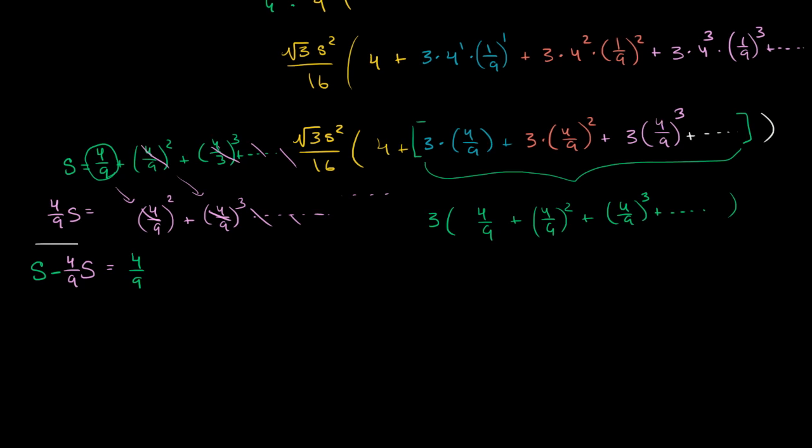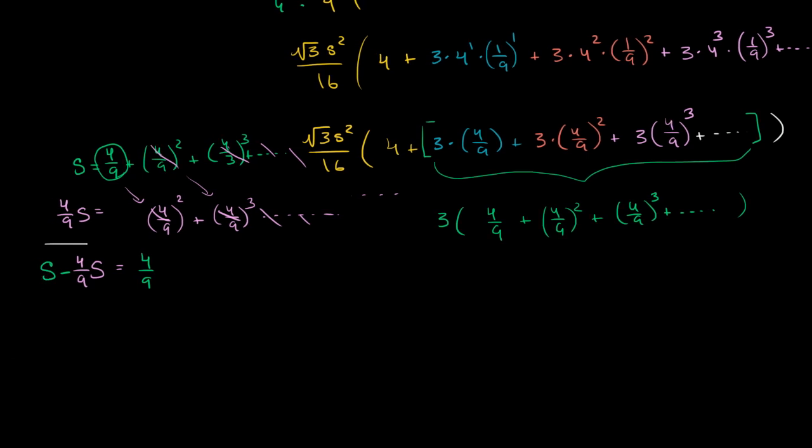This 4/9 S is the same thing as 9/9. So we could write this as 9/9 S minus 4/9 S equals 4/9. So 9/9 minus 4/9 of something gives us 5/9. This becomes 5/9 S equals 4/9. To solve for S, multiply both sides times 9/5 so we can isolate the S. We get S equals 4/5.